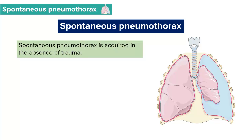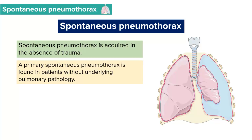Spontaneous pneumothorax is a type of pneumothorax acquired or developed in the absence of trauma. We have two types of spontaneous pneumothorax: primary spontaneous pneumothorax and secondary spontaneous pneumothorax.